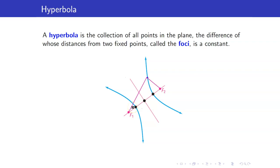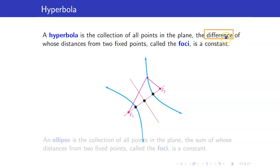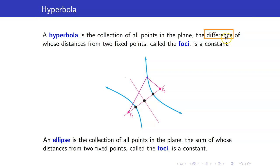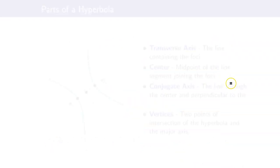Take note of the difference between the definition of a hyperbola and that of an ellipse. For a hyperbola, you get the difference of the distances, whereas for an ellipse, you get the sum of the distances from the two foci.